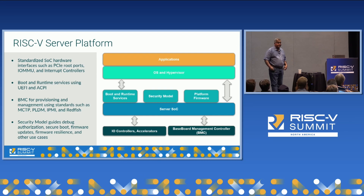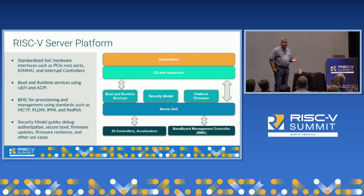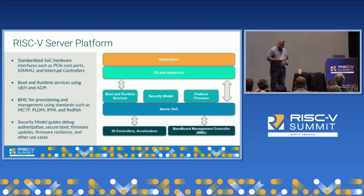The server platform specification also includes the security model — recipes for how to integrate a secure system — the firmware that initializes these SOCs, and adjacencies such as the board management controller that manages sensors and does configuration of the server platform. We want to provide standardized interfaces even for things not directly visible to software, because they are very important for a server. So this collective — the server SOC, boot and runtime services, security model, platform firmware, and profiles — together forms the bigger picture of a server platform specification.